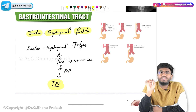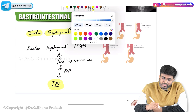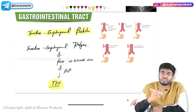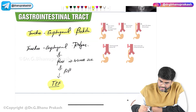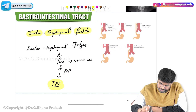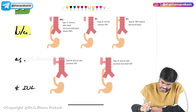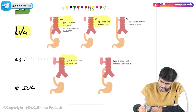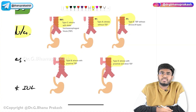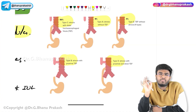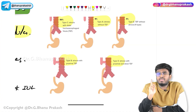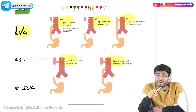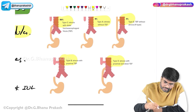What they will ask you in your exam is the types. There are different types of tracheoesophageal fistula: Type A, Type B, Type C, Type D, and Type E. The first important MCQ: which one is the most common type? The most common type is Type C.